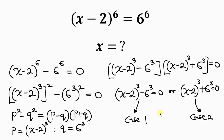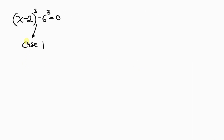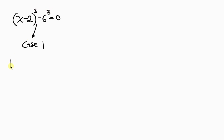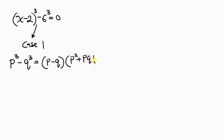Starting with Case 1, we have an expression in the difference of two cubes. When we have p cubed minus q cubed, this can be expressed as p minus q times p squared plus pq plus q squared. By comparison, our p is x minus 2 and our q is 6.